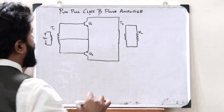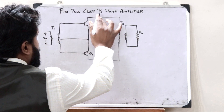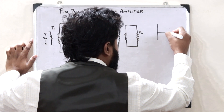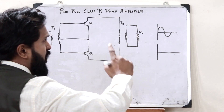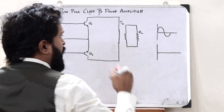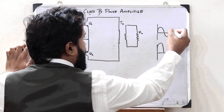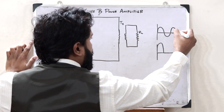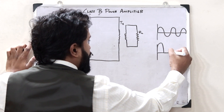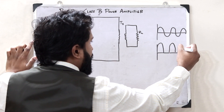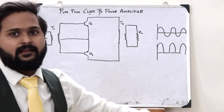A class B power amplifier is an amplifier which uses one transistor. In the case of a class B power amplifier, when we give an input signal, we get an amplified output signal in only one half of the input signal. For the first half we get an amplified signal, but in the second half we will not get anything. So only for one particular half do we get an output signal — the other half produces nothing across the output.